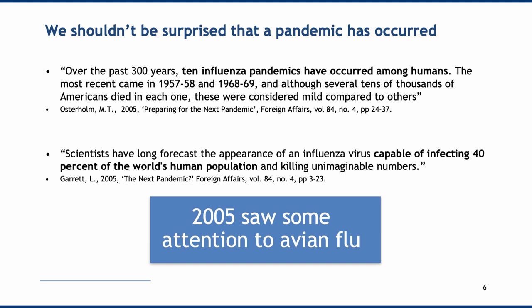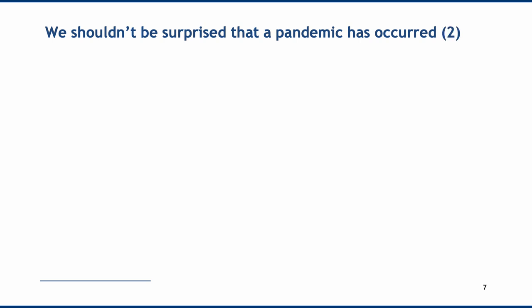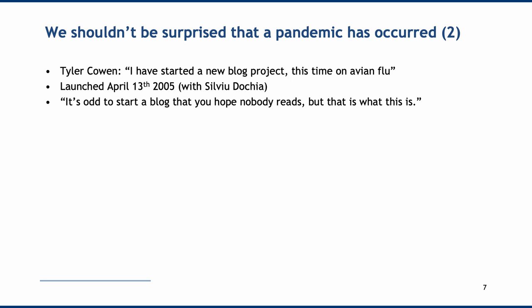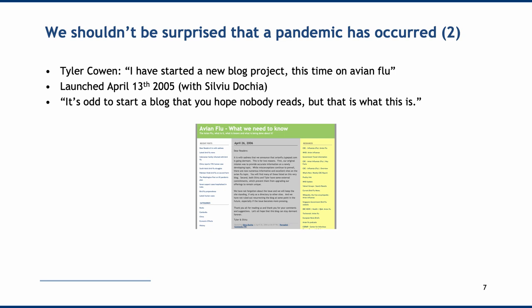In 2005, there was significant attention given to an avian flu that might migrate to humans. I remember being a graduate student at George Mason, where one of my professors, Tyler Cowen, announced he'd started a blog on avian flu with a graduate school friend, Sylvia Udochia. Tyler said it's odd to start a blog that you hope nobody reads, but that is what this is. They tracked avian flu in anticipation of it becoming a major global issue. The website still exists; the final post was April 26, 2006, as avian flu didn't cause a global pandemic.